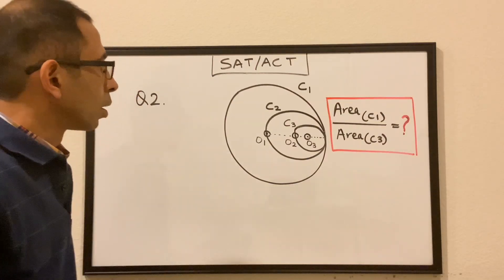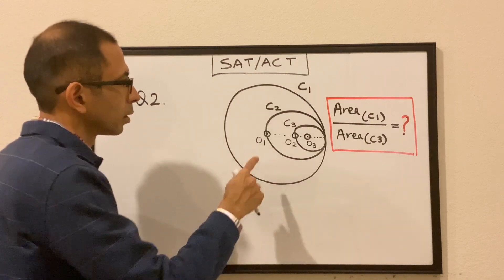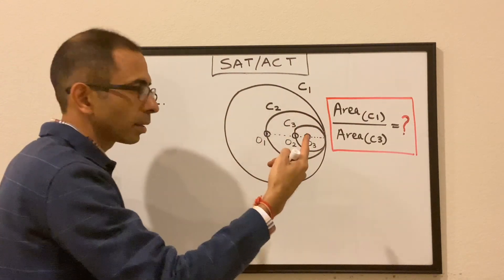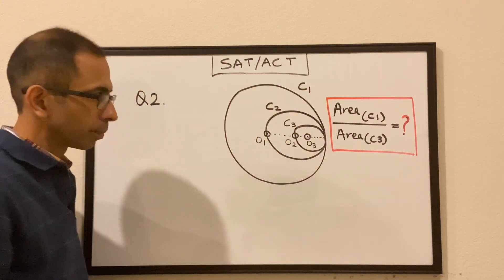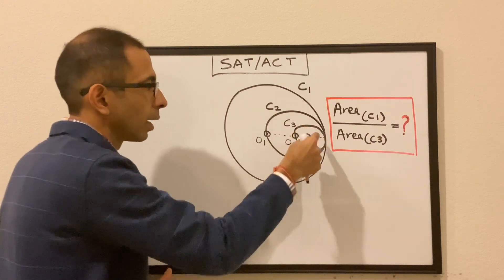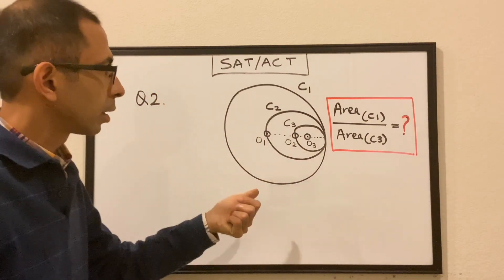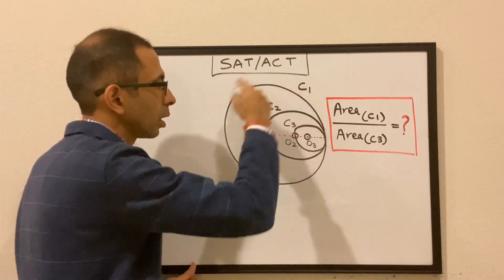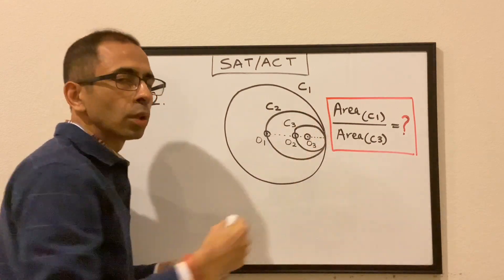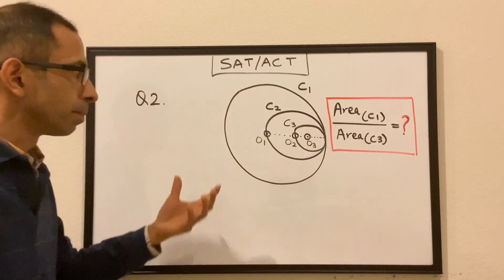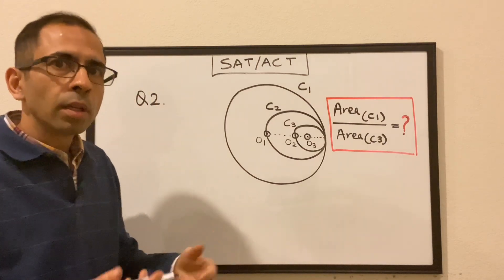Now question number two. We have three circles C1, C2, and C3. C1 is the biggest circle. Inside C1 we have circle C2, and C2 passes through the center of C1. Within C2 we have circle C3, and C3 passes through the center of C2. We need to find the ratio of the area of the biggest circle C1 to the area of the smallest circle C3. Again, no dimensions are given, but we can assume a variable and things will cancel out.